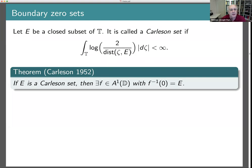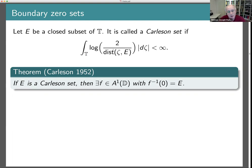The Carleson set condition certainly implies E has measure zero, but says more than that. Because E is a closed subset of the circle, its complement is open — a union of open arcs. The condition says: if you call the j-th arc I_j, then the sum of |I_j| log |I_j| must converge. This is not just a condition on the size of E, but on how E is distributed on the unit circle — a kind of regularity condition.